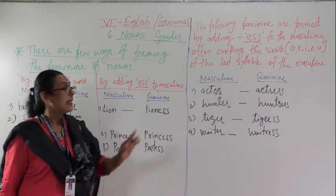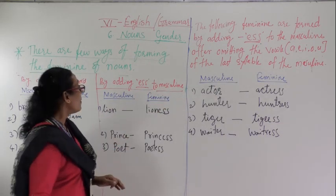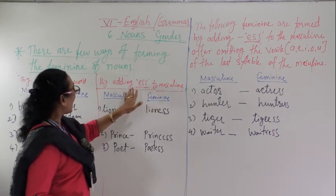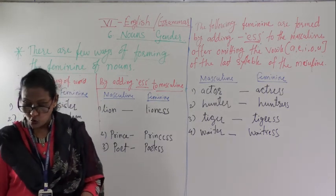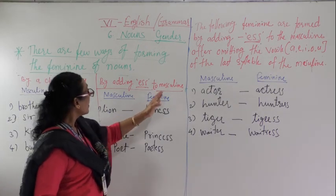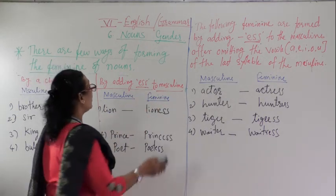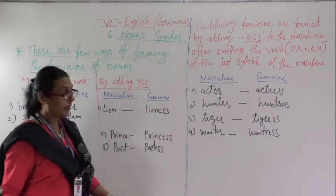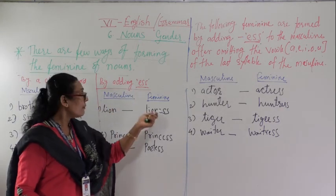The second method is by adding -ess to the masculine. We add E-S-S to the masculine to form the feminine. For example, Lion in the masculine — by adding -ess in the feminine we get Lioness.